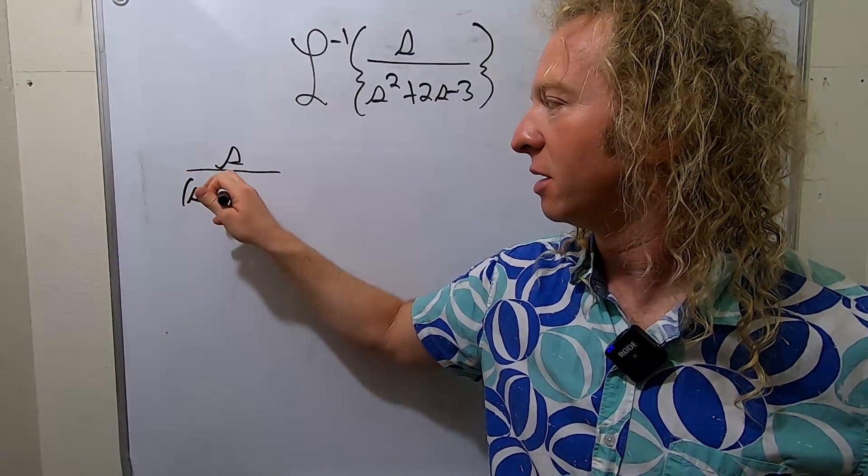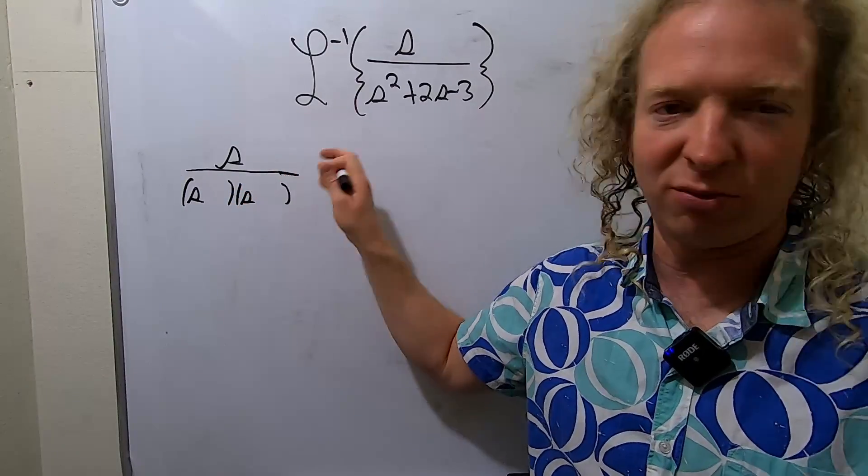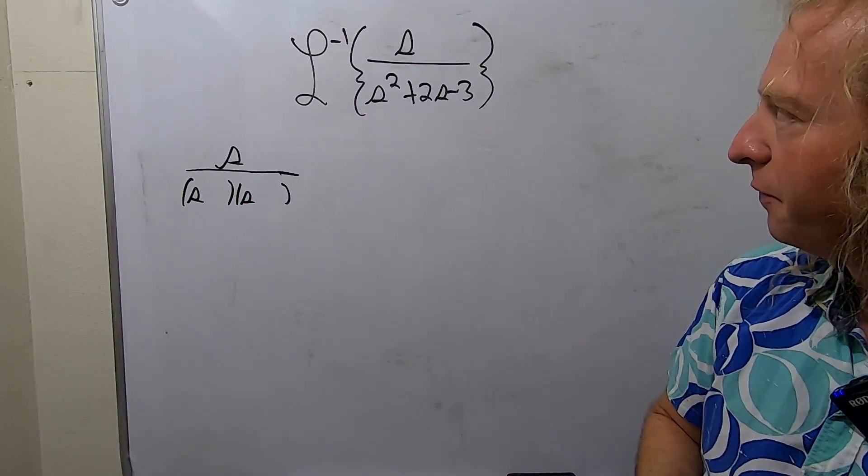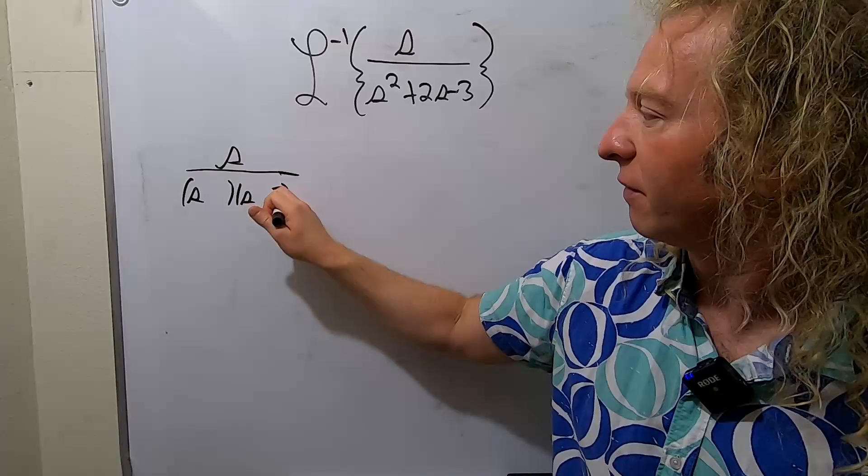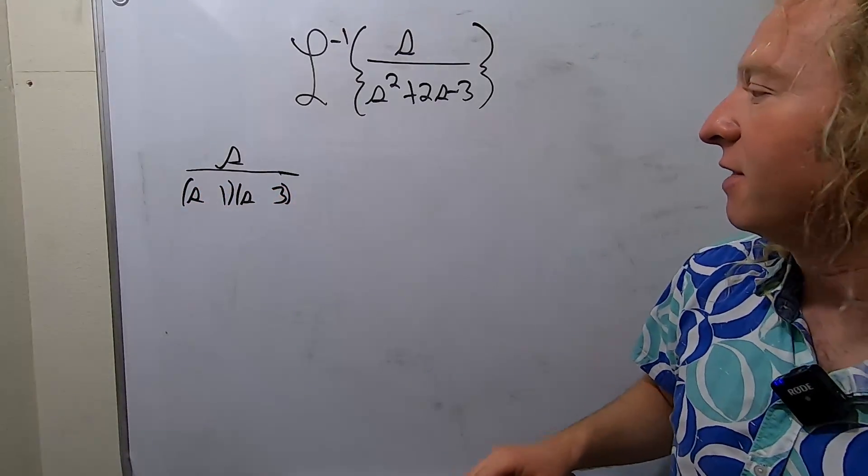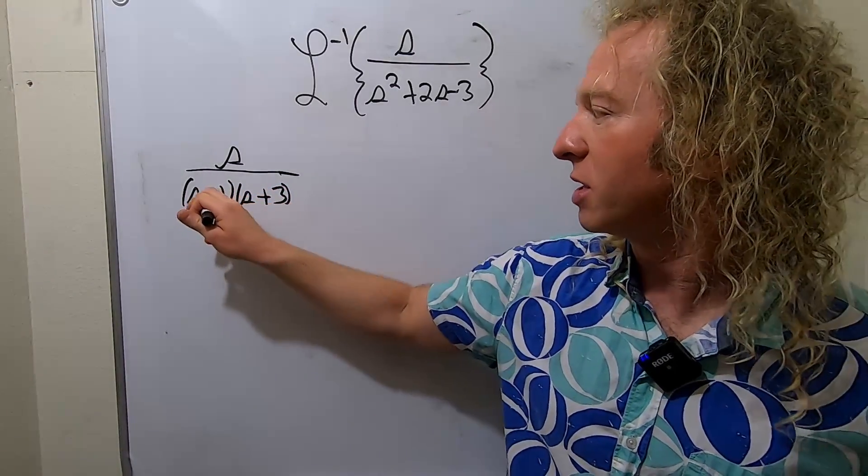So this is S... If it doesn't factor and I messed up, we'll complete the square. I think 3 and 1, and I think the 3 is positive and the 1 is negative. Let's check.